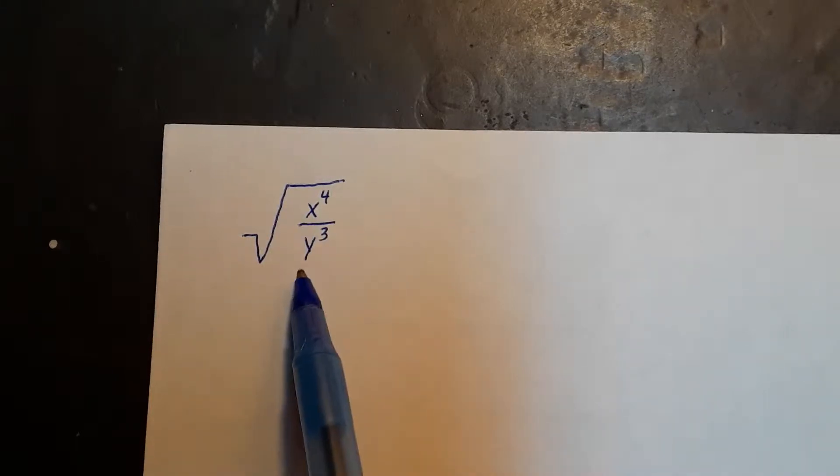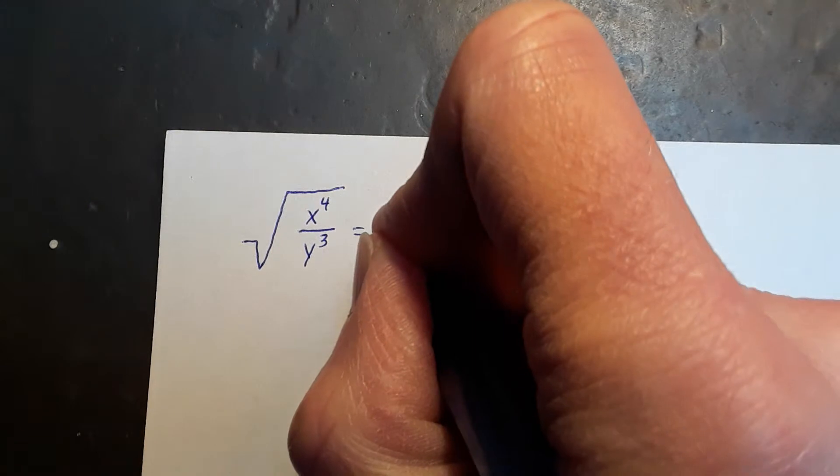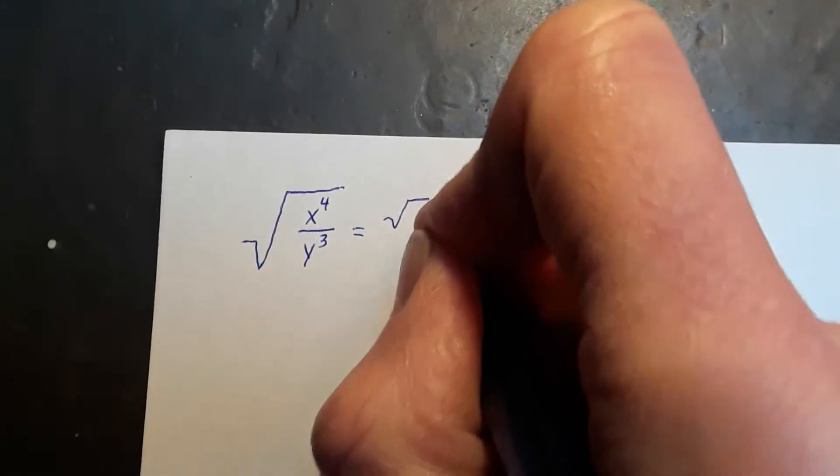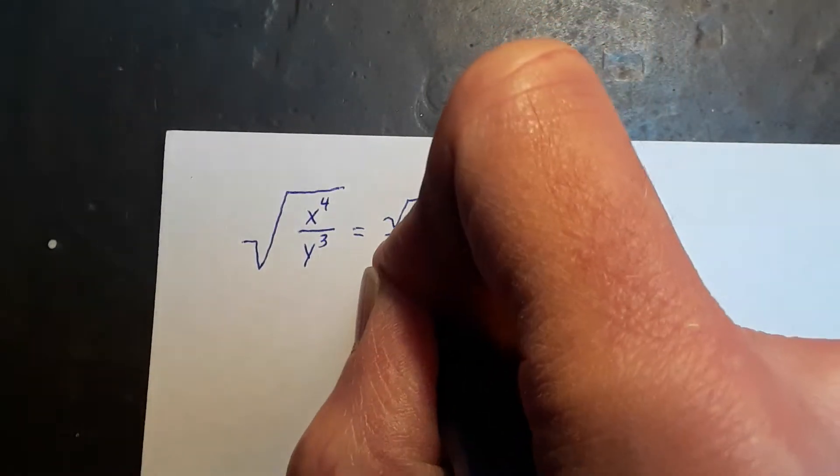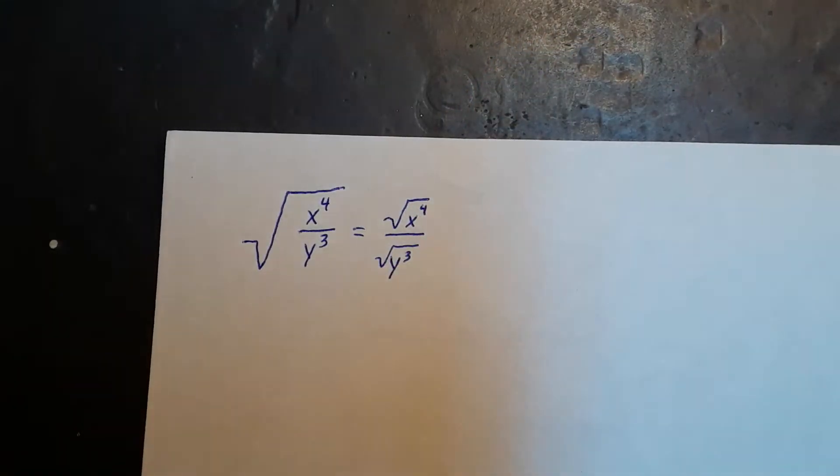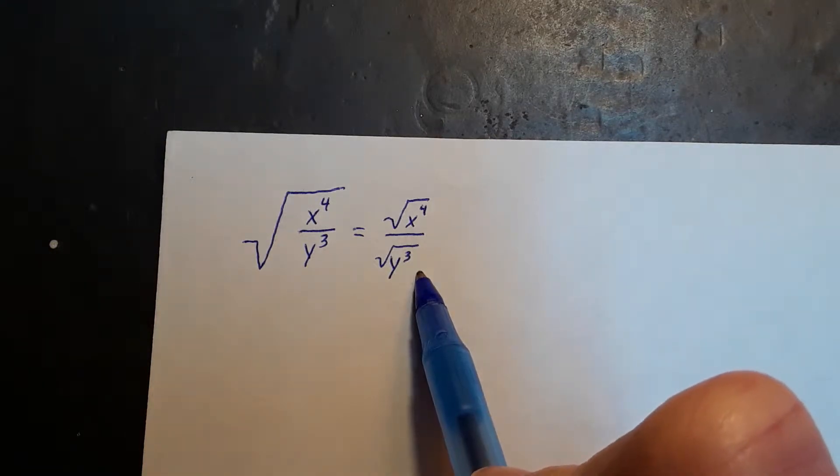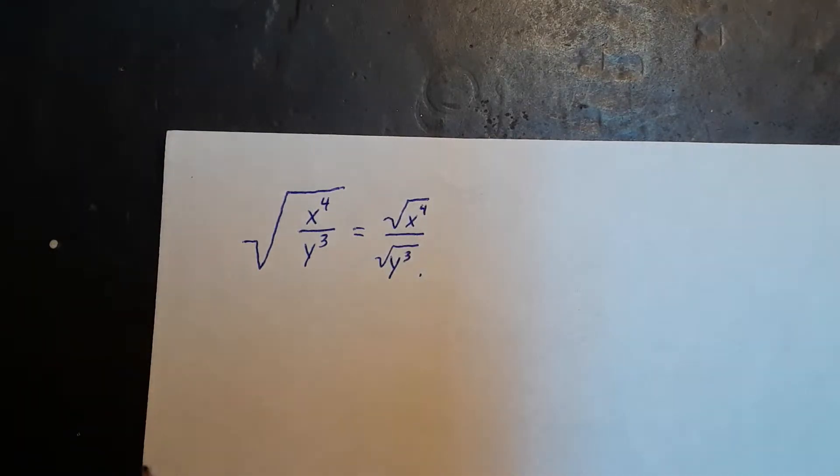We can rewrite this fraction as the quotient of two square roots. This is an equivalent form. And so this now looks like what we have when we're given a problem where we have to rationalize the denominator.